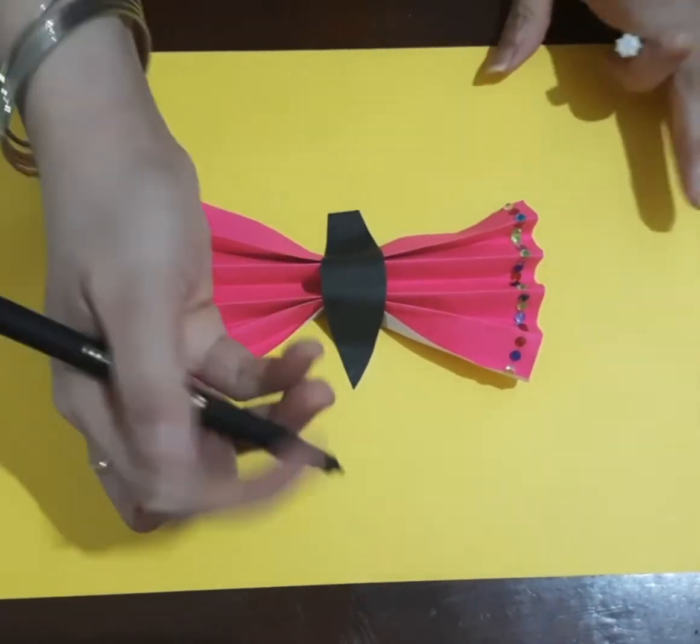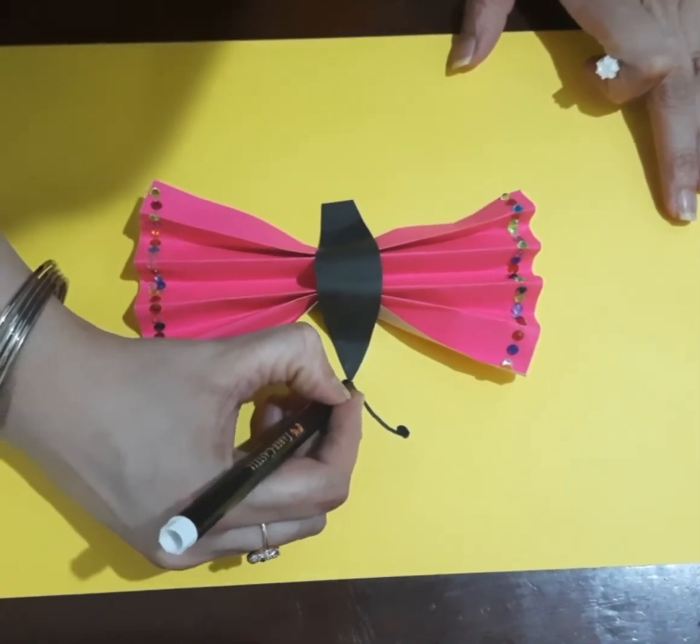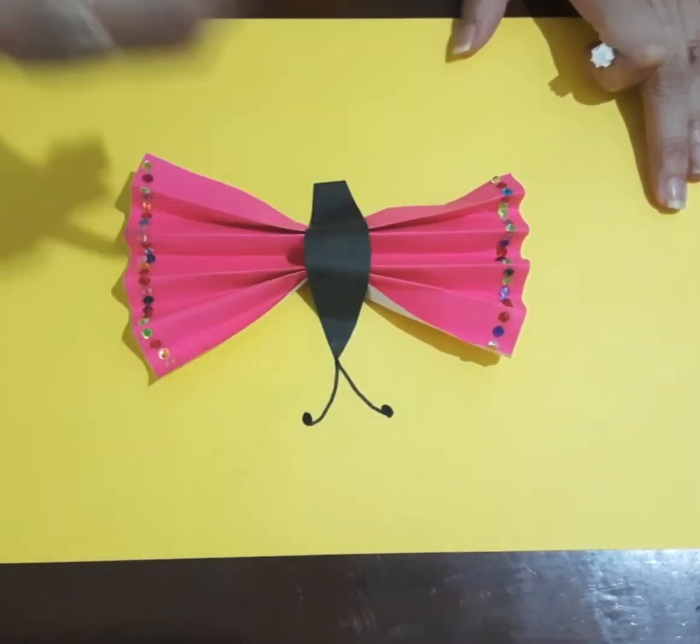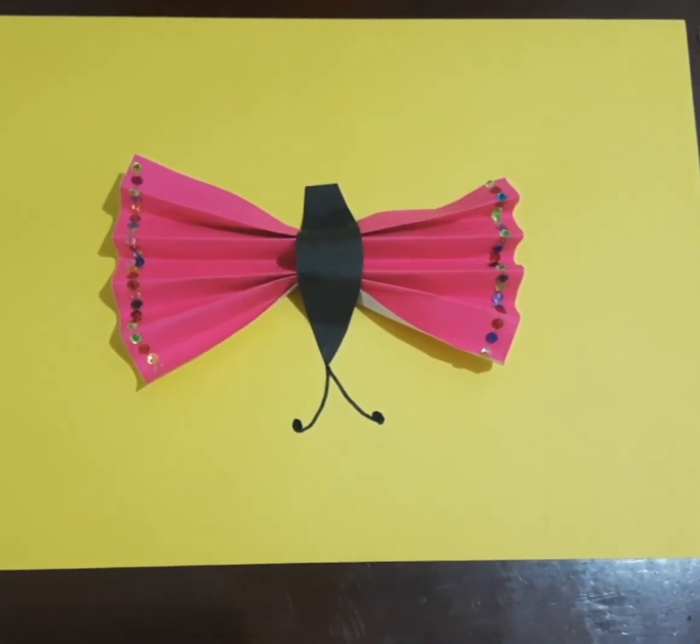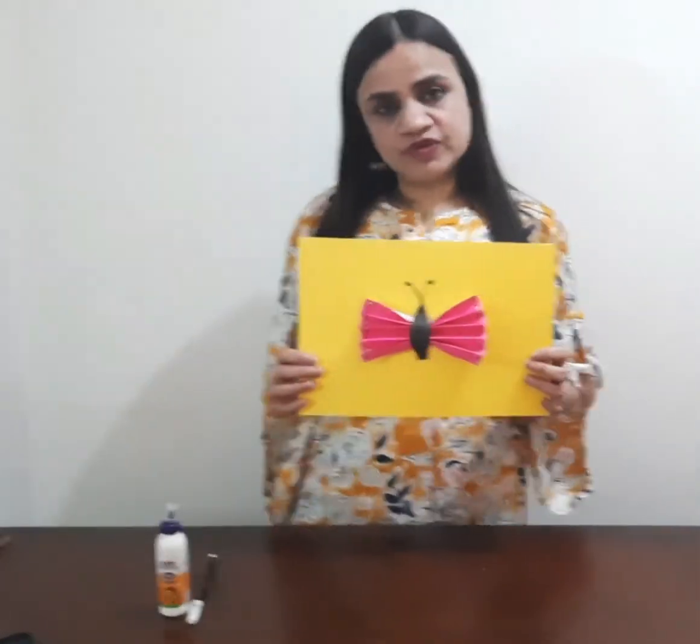Now we will take the black marker to make the antennae of the butterfly. So guys, our butterfly is ready. It's our colorful butterfly. It's very easy. For more fun-based activity learning, subscribe to Orange Blast and please like and share the video. Thank you.